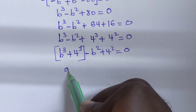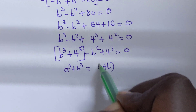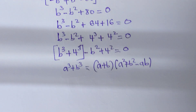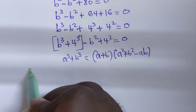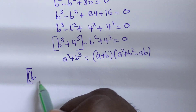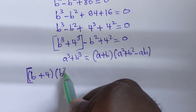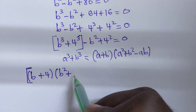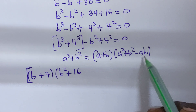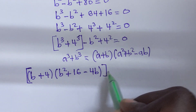Now we apply the sum of cubes formula: a cubed plus b cubed equals (a plus b)(a squared plus b squared minus ab). Here our a is equal to b and our second value is 4. So b squared plus 4 squared equals 16, and the ab term gives minus 4b.